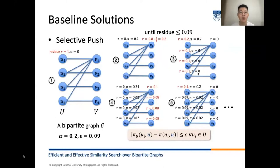In the third step, V1 pushes all its residual to its neighbors U1, U2, U3, and U4 accordingly. This process repeats until all residuals at nodes in the node set U are less than the given threshold epsilon, namely 0.09.